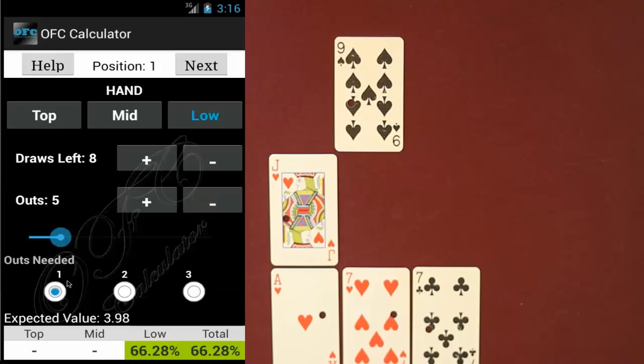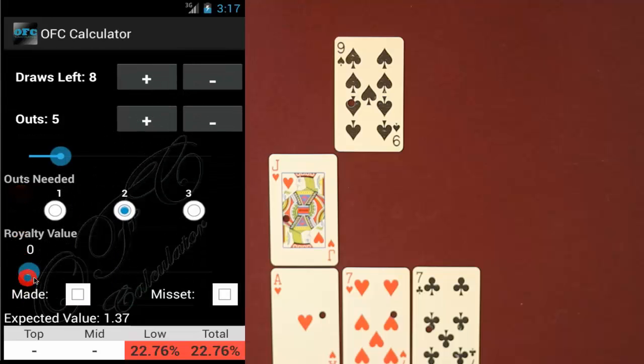Next you would change the outs needed button to two because you need two of those five outs to make your full house. After that you can change the royalty value to six in this case because usually a full house on the bottom is worth six royalty points but really you can change it to whatever royalties you're playing with. Then down on the bottom you can see your expected value and also your percentage of hitting your full house. Your expected value is 1.37 and your chances of hitting the full house is 22%.